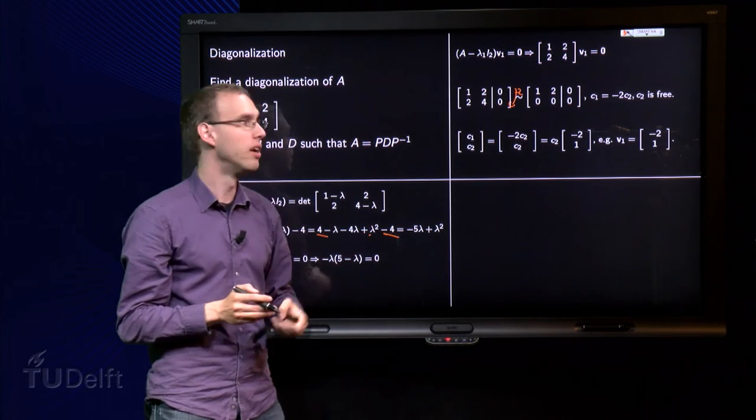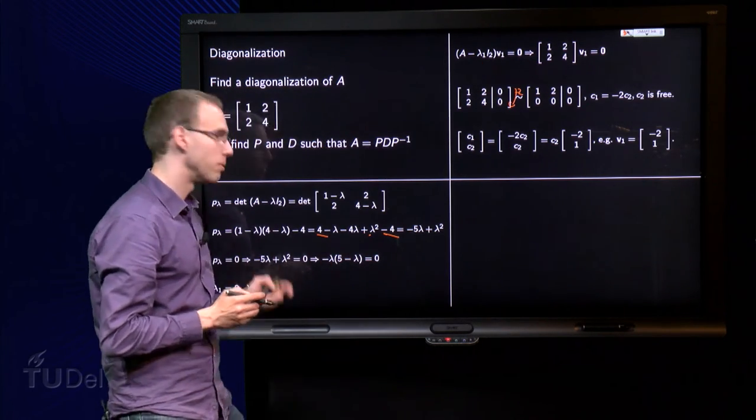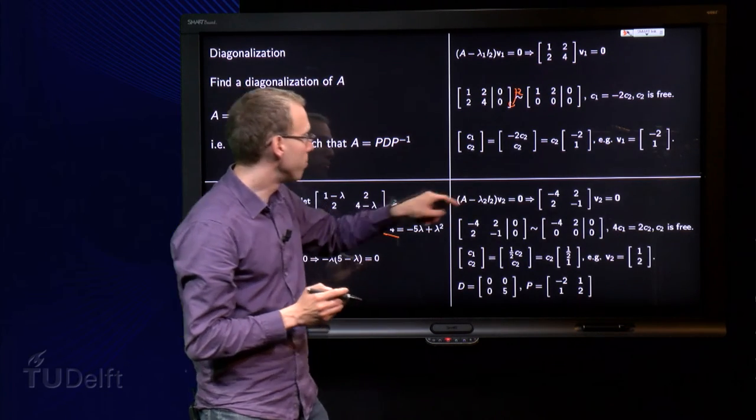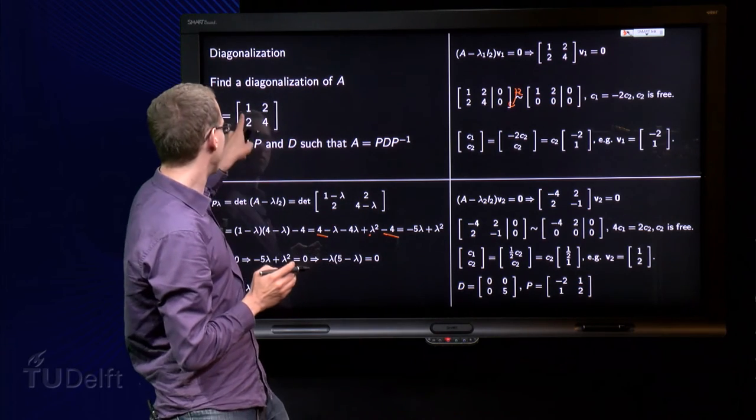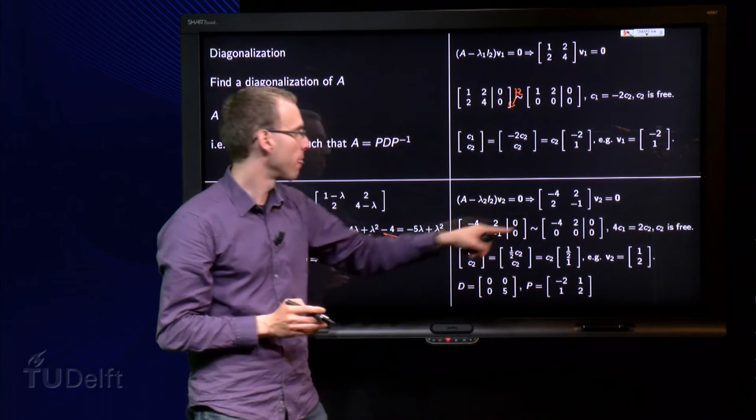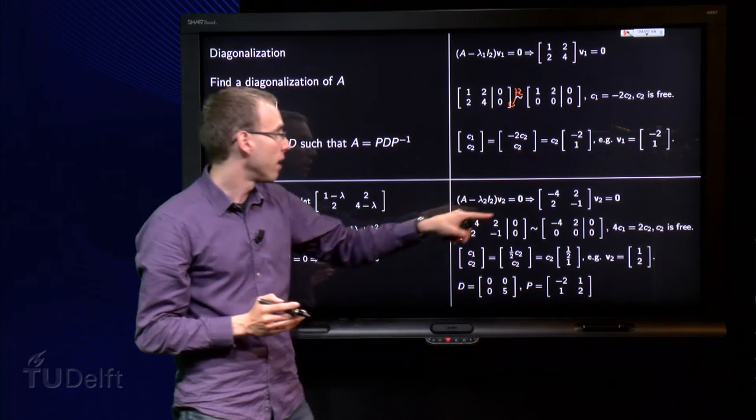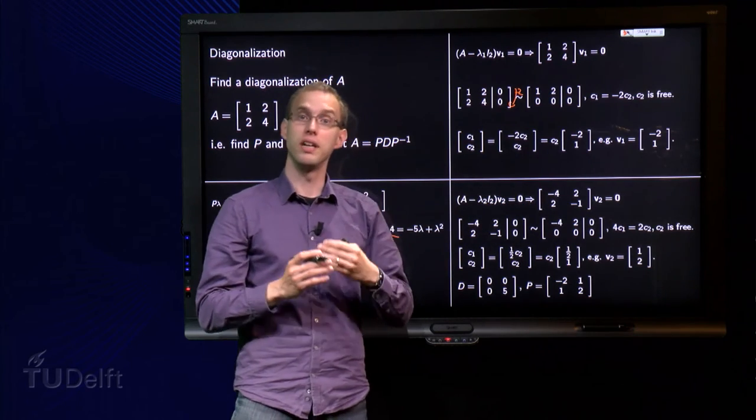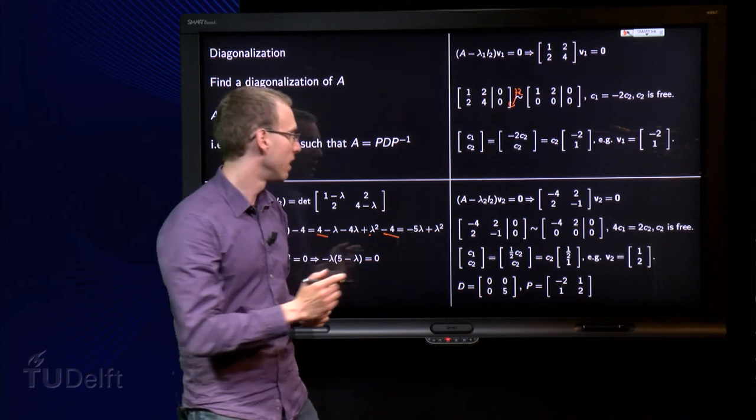Second eigenvector, we just do the same computation here, but now for lambda 2 equals 5. So, we compute A minus 5 times the identity matrix, so we subtract 5 from the diagonal, so we get the minus 4 and the minus 1 over there. 2's stay on the same spot. This matrix times V2 equals the zero vector, make again the augmented matrix.